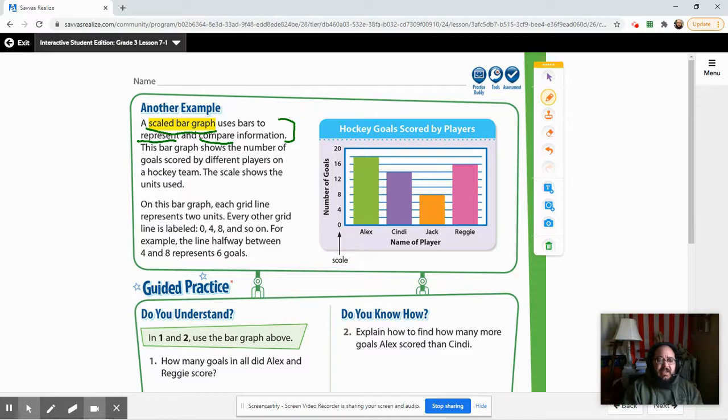So this one, this is a scaled bar graph, means there's a scale on the side, which in this case would be the number of goals, okay? We are skip counting by 4: 0, 4, 8, 12, 16, and 20, but there are lines in between, which really means that every one of these grid lines here represents two units. So right here would be a 2, 4, 6, 8, 10, 12, 14, 16, 18, and 20, okay?